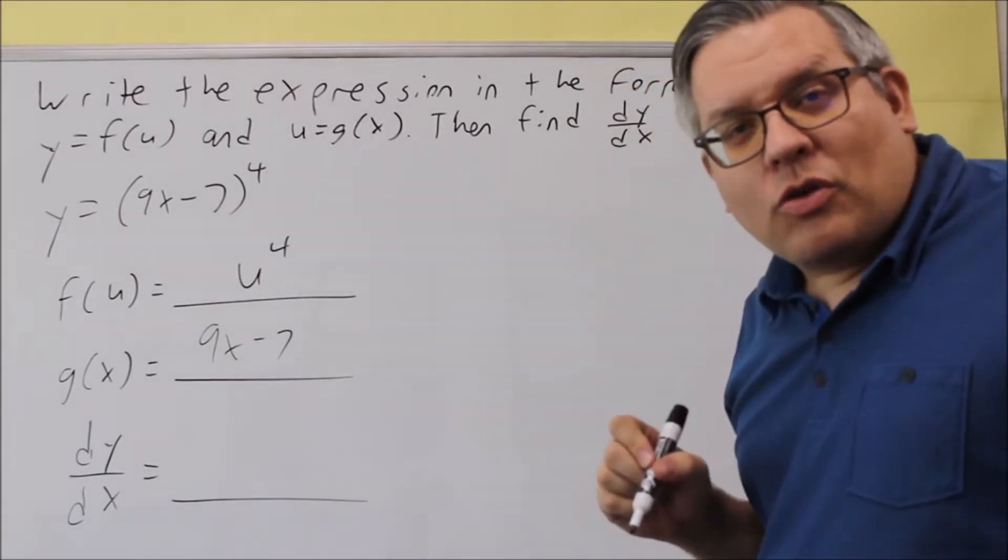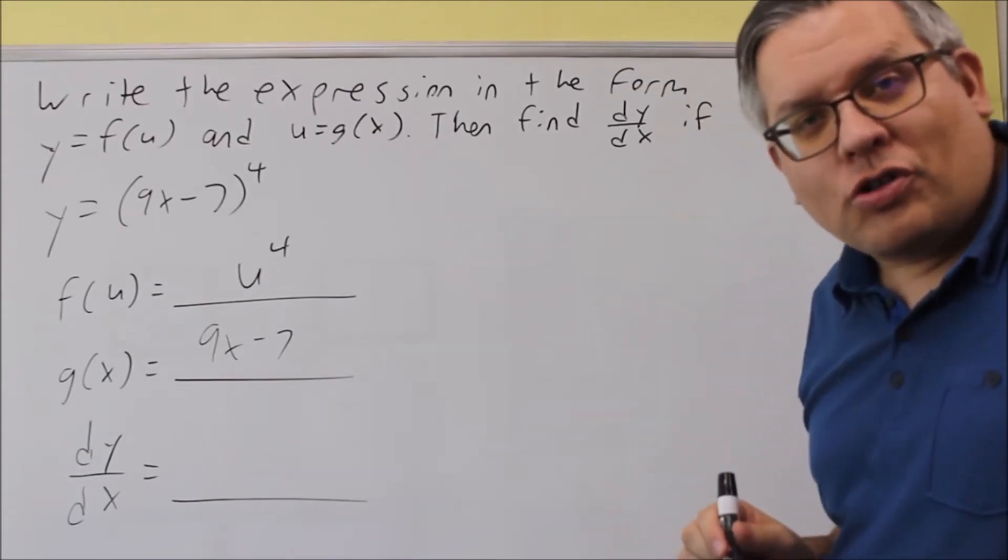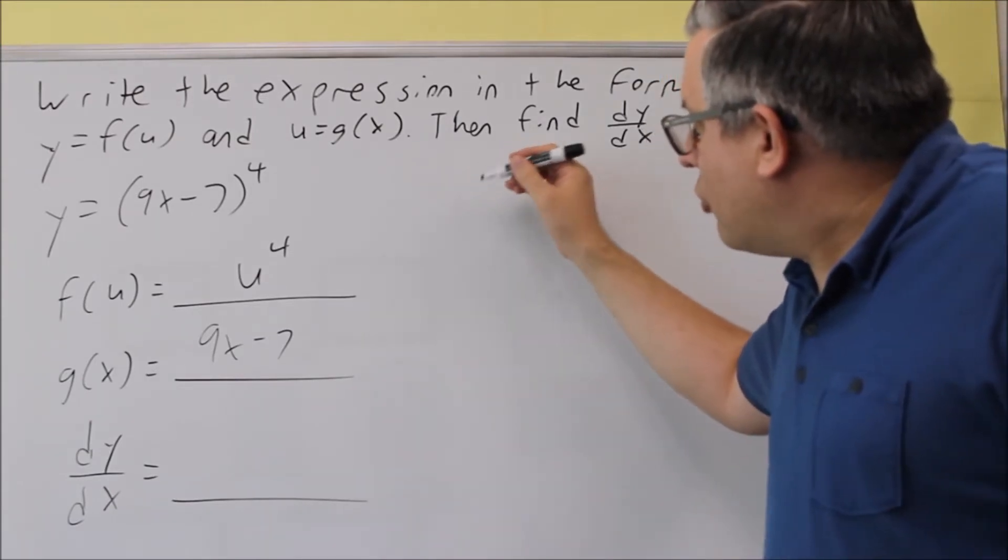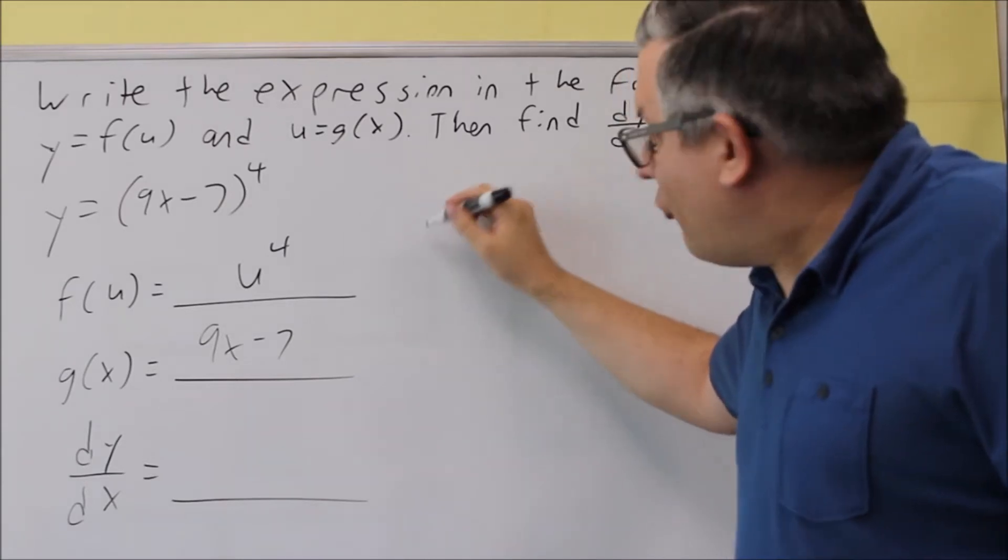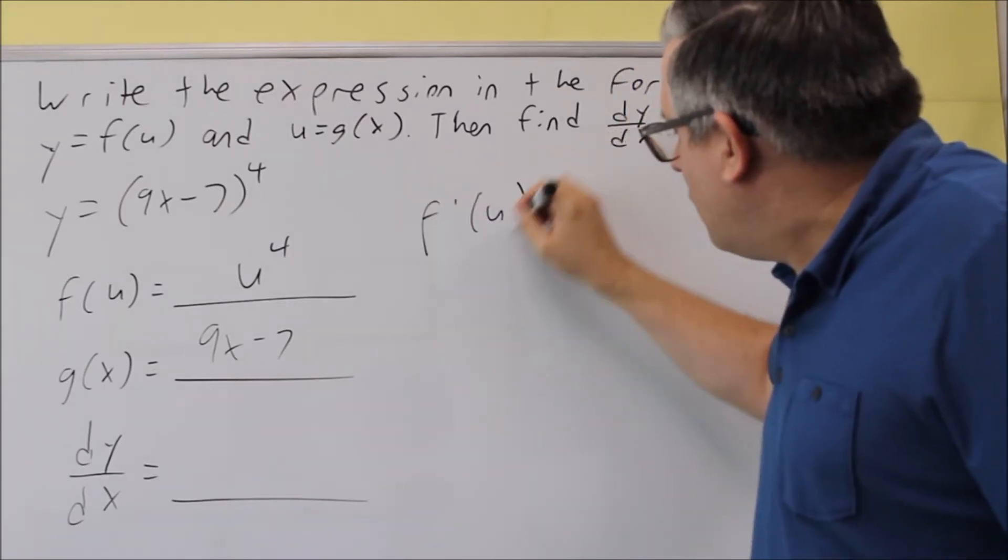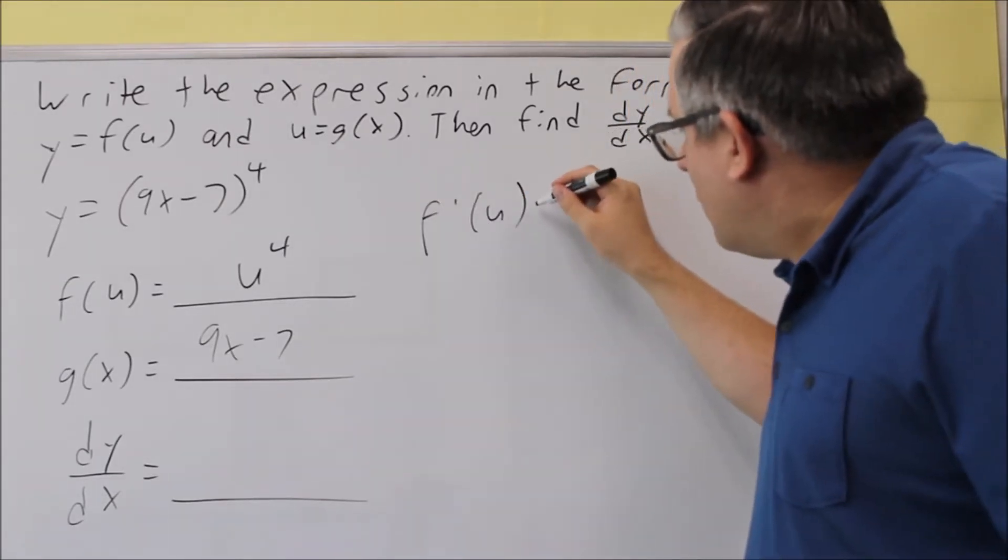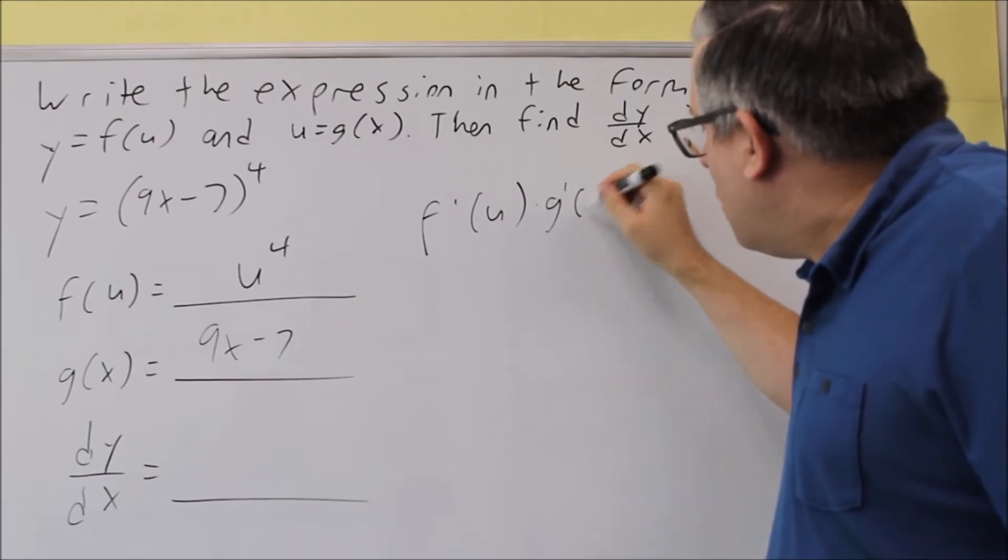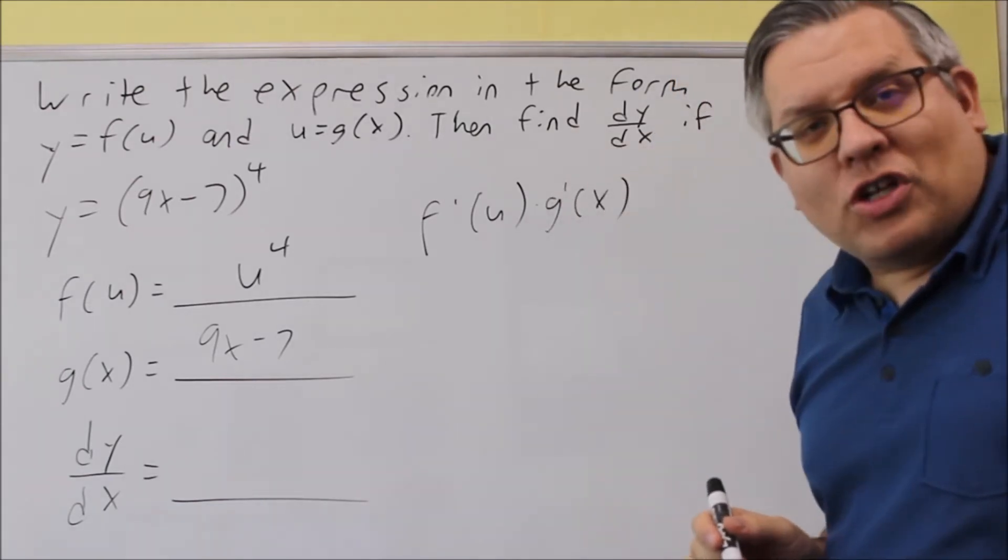So now, we're going to use the chain rule formula in order to do this. To find the derivative, the formula for it is derivative of f, and then times the derivative of u, which in this case is going to be the derivative of g of x.